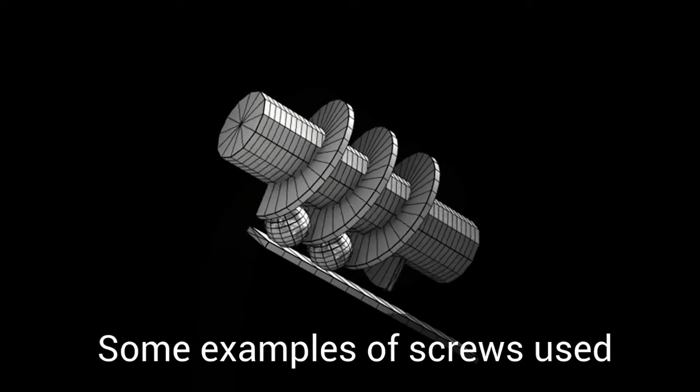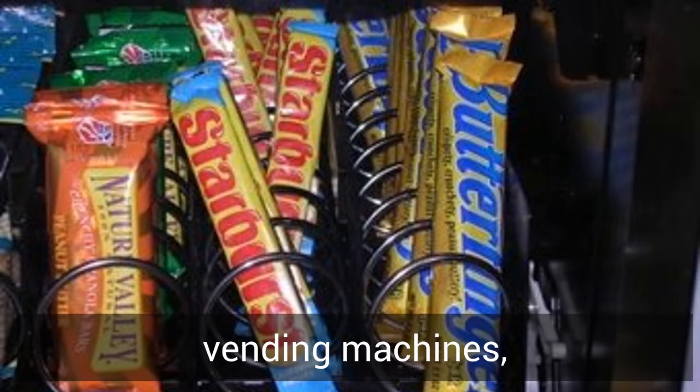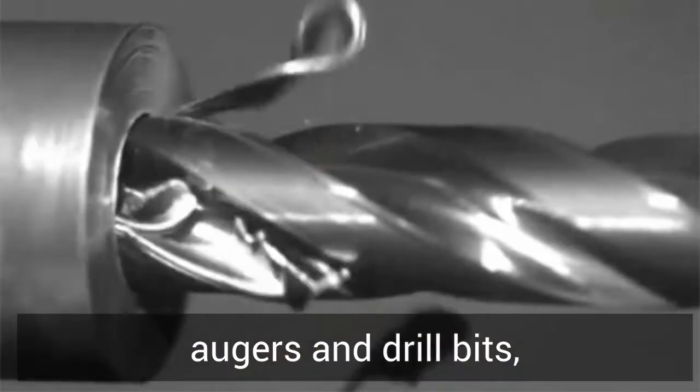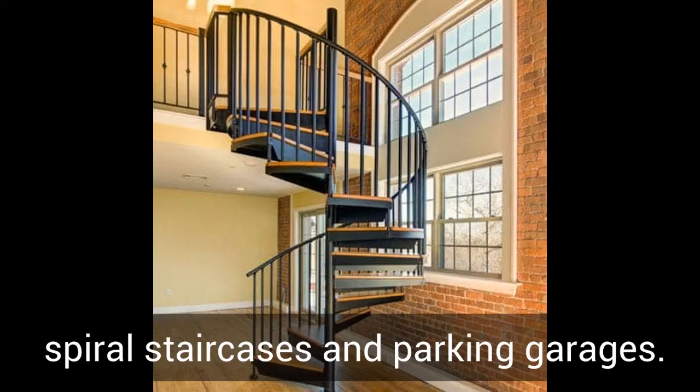Some examples of screws used in this way can be found in vending machines, augers and drill bits, spiral staircases, and parking garages.